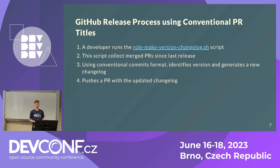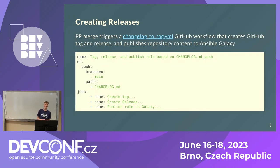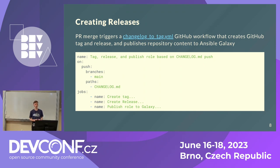To sum up the process: the developer runs the script, which collects merged PRs since the last release and processes them to identify the new semantic version and generate the new changelog. The pull request with the updated changelog is pushed, and the developer merges it. After this, a GitHub workflow triggers on pull request pushes to the main branch that change the changelog.md file. It creates a GitHub release and propagates the new repository content to Ansible Galaxy.